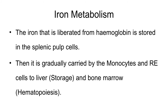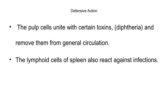Another function is the metabolism of iron. Iron that is released is stored in the splenic pulp cells, and gradually these cells — like the macromonocytes and cells of the reticular endothelial system, the macrophages — carry the iron from the spleen to the liver for storage or to the bone marrow where it is used in the process of hematopoiesis. The spleen also has a defensive action because the splenic pulp cells have an ability to interact with certain toxins like the diphtheria toxin, removing it from the general circulation. The spleen's lymphocytes also react against infectious agents and help in fighting against pathogens.